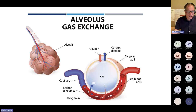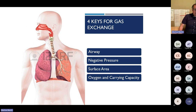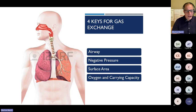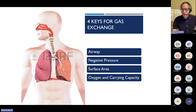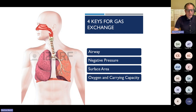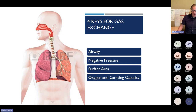What's necessary for gas exchange? You need a patent airway, you need to generate negative pressure from the diaphragm and accessory muscles of breathing, you need unimpeded surface area in the lungs that allows for free gas exchange, and you need oxygen coming into the lungs with the carrying capacity to transport that oxygen throughout the body and return carbon dioxide back to the lungs. Everything that goes wrong with breathing is a problem with one of these four things.